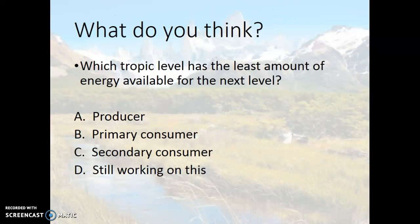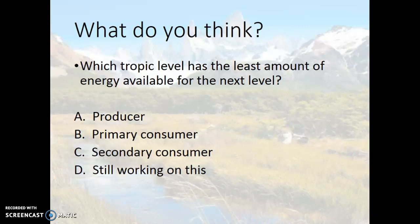Which trophic level has the least amount of energy available to the next? A. Producer, B. Primary consumer, C. Secondary consumer, D. Still working on it. The answer is C, the secondary consumer, because it has the least amount of energy available based on the levels of the pyramid.